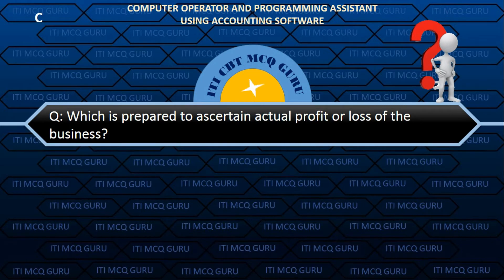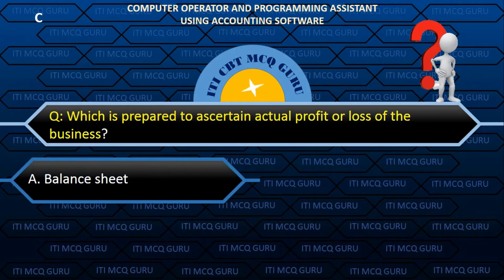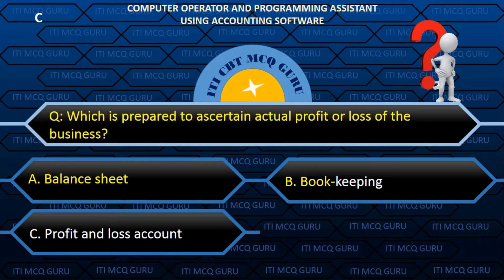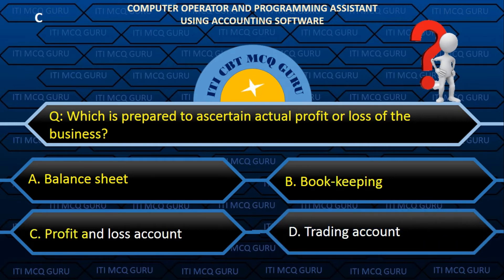Which is prepared to determine the actual profit or loss of the business? C. Profit and loss account.